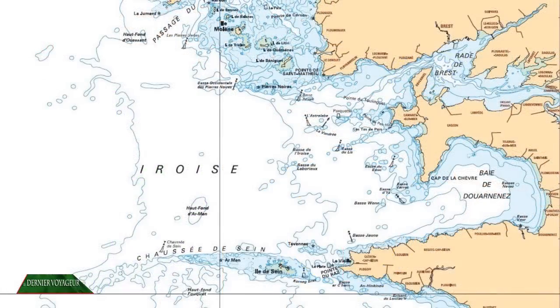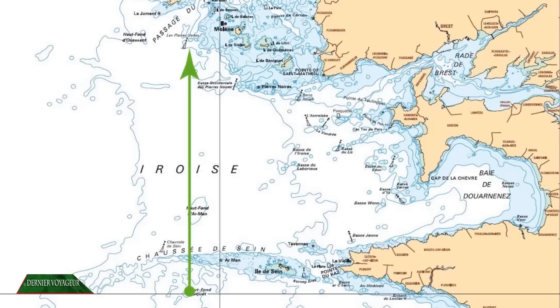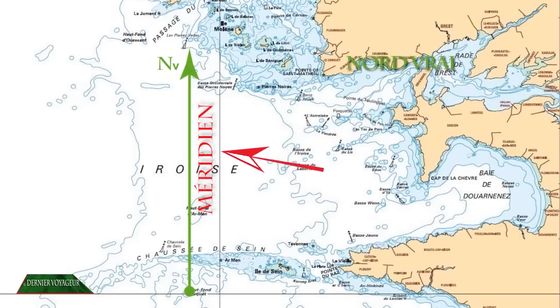Le nord indiqué par la carte, le nord géographique, est appelé par les navigateurs nord vrai. Sur le papier, les lignes verticales sont orientées nord-sud avec le nord en haut de la carte.